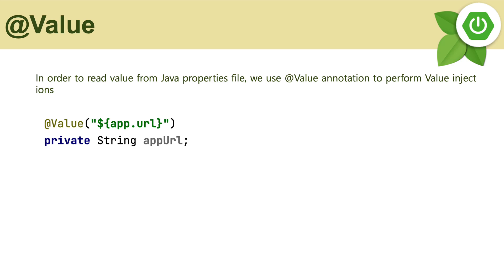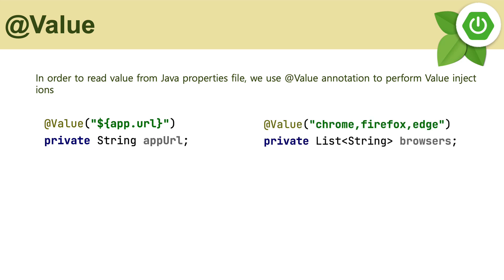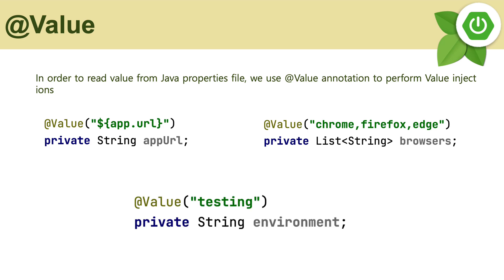If you want to read a list of browsers, you can put comma-separated values and read the list of all browsers being passed in either an application.properties file or directly in the annotation value. You can also simplify reading an environment variable like this — just put @Value("testing") and you will get the value as 'testing' when you call environment. That's how easy value injection is in Spring Boot.